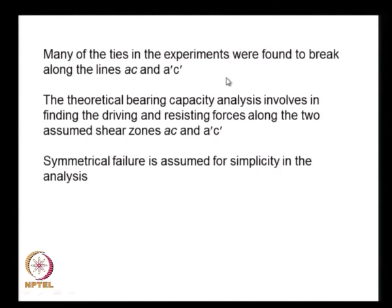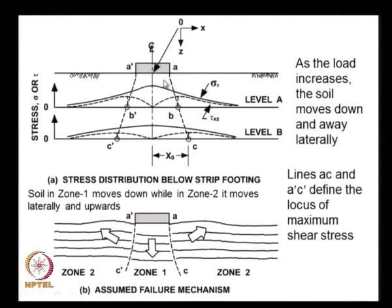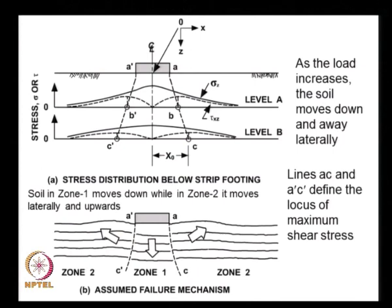Many ties in the experiments were found to break along lines AC and A'C'. The theoretical bearing capacity analysis involves finding the driving and resisting forces along these two assumed shear zones. For simplicity, a symmetrical failure about the center line is assumed — whatever happens on the right also happens on the left — and the entire soil is assumed homogeneous, giving only vertical uniform settlements with no rotation.